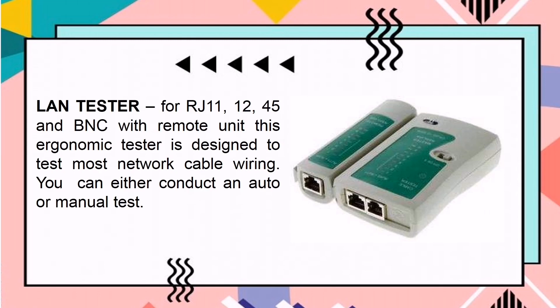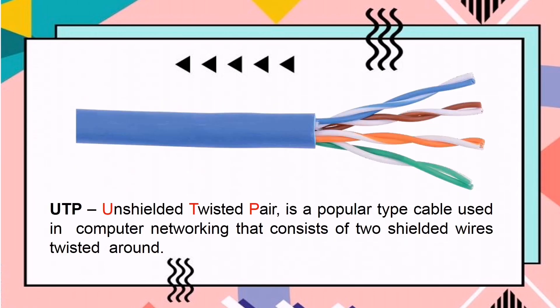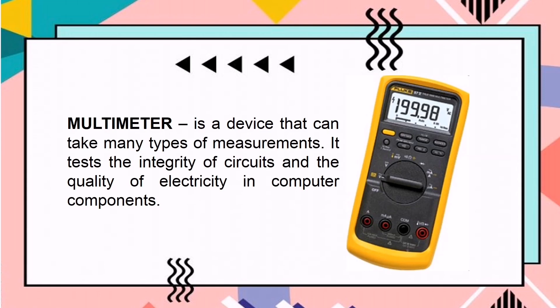LAN tester — for RJ11, RJ12, RJ45, and BNC with remote unit — this ergonomic tester is designed to test most network cable wiring. You can either conduct an auto or manual test. UTP, or unshielded twisted pair, is a popular type of cable used in computer networking that consists of two shielded wires twisted around each other. Lastly, multimeter is a device that can take many types of measurements. It tests the integrity of circuits and the quality of electricity in computer components.